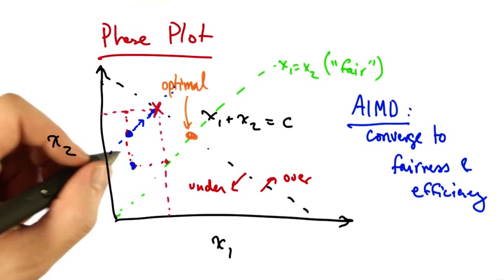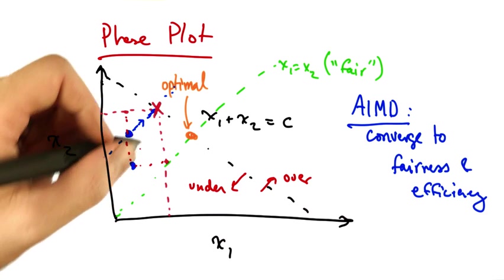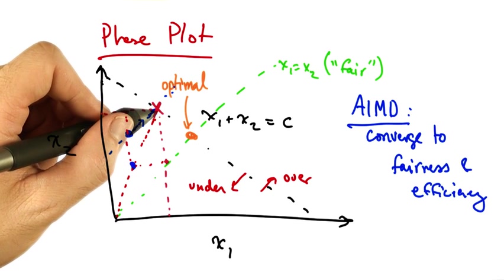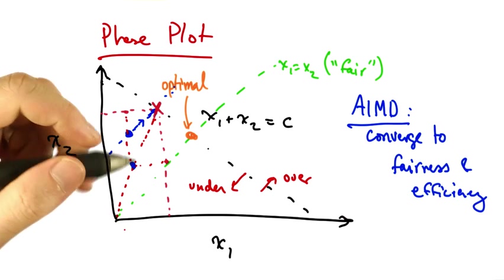Note that that new operating point, as a result of multiplicative decrease, is on a line between the point on the efficiency line that the senders hit and the origin.